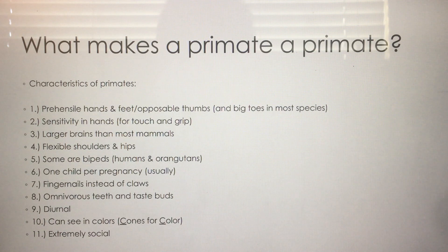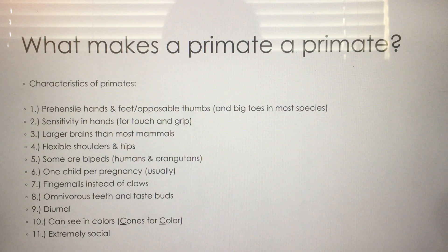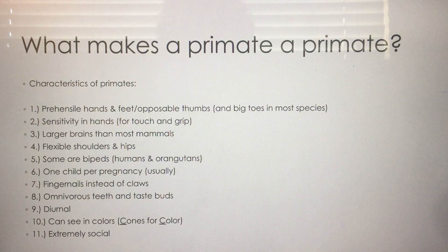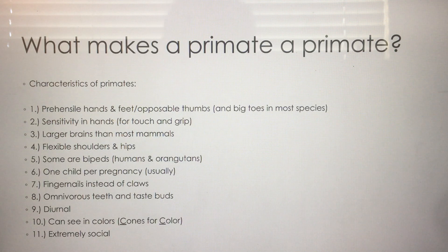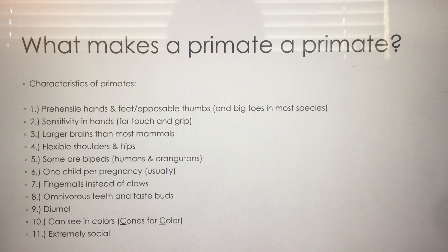Number six: one child per pregnancy usually — we don't have litters like dogs. We also have fingernails instead of claws. Number eight: omnivorous teeth. We eat plant matter and animal matter, so we don't have canines as sharp as a cat or tiger, but we don't have a mouth full of molars like a cow or horse either — a little bit of both. Cows and deer actually have more taste buds than we do because their lives depend on identifying poisonous plants, whereas cats have very few. We're somewhere in the middle.